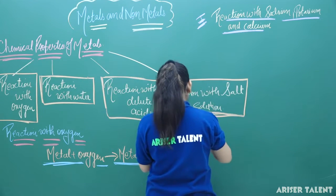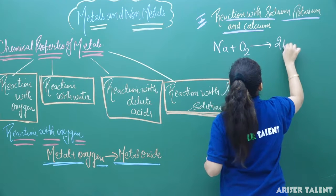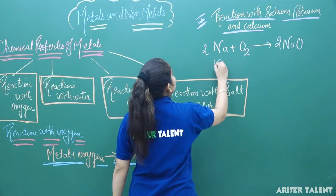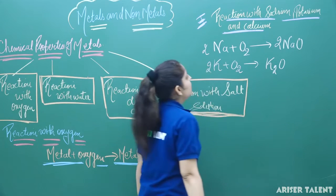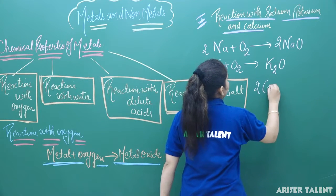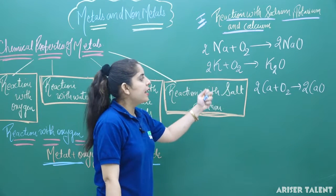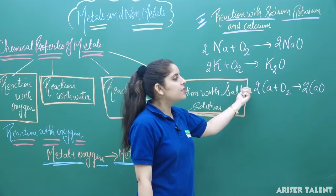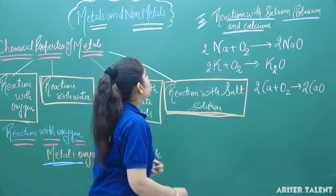Sodium (Na) reacts with O₂ to form sodium oxide. Potassium reacts with oxygen to form potassium oxide. Calcium reacts with oxygen: 2Ca + O₂ → 2CaO. You can see that all these reactions occur only at room temperature — at simple room temperature they react with oxygen and form their corresponding oxides. The second part is the reaction of magnesium.